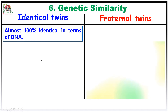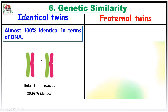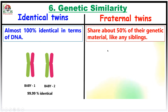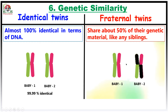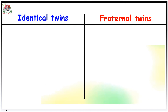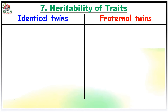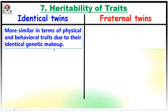The next point of reference is about genetic similarity. Identical twins are almost 100% identical in terms of DNA. On the other hand, fraternal twins share about 50% of their genetic material, like any other siblings.